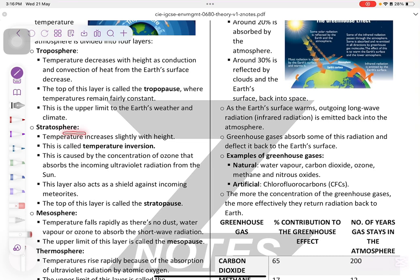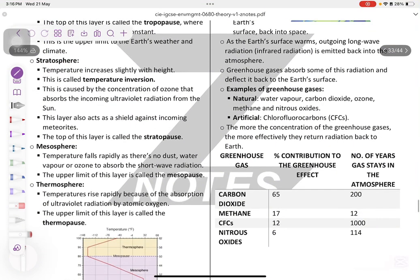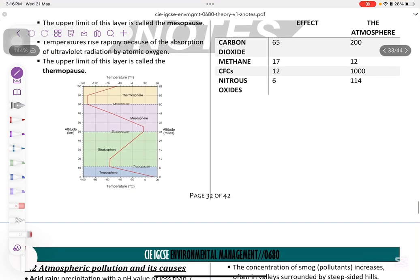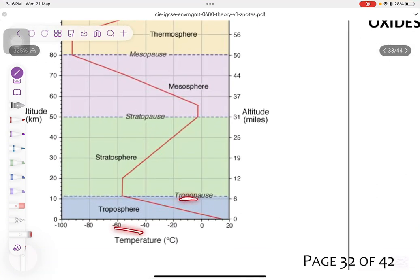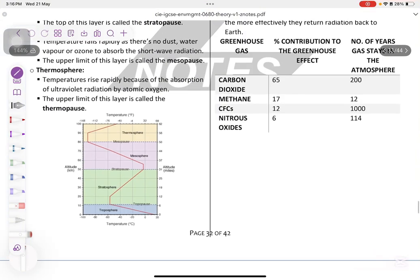So stratosphere, the temperature increases slightly with height. Temperature inversion happens in stratosphere. Also, it absorbs the incoming ultraviolet radiation, and that causes the ozone depletion because ozone is present in the stratosphere. Mesosphere temperature falls rapidly, and there is no dust, water vapor, or ozone to observe the shortwave radiations. Thermosphere temperature rises rapidly because of the absorption of ultraviolet radiation by atomic oxygen.